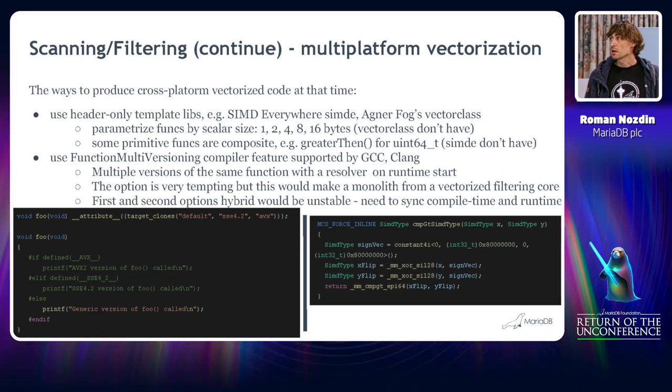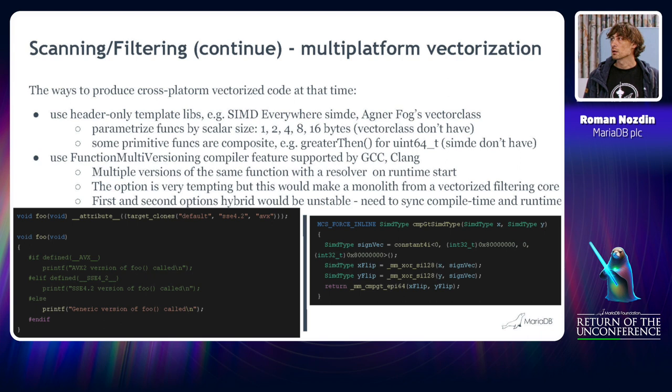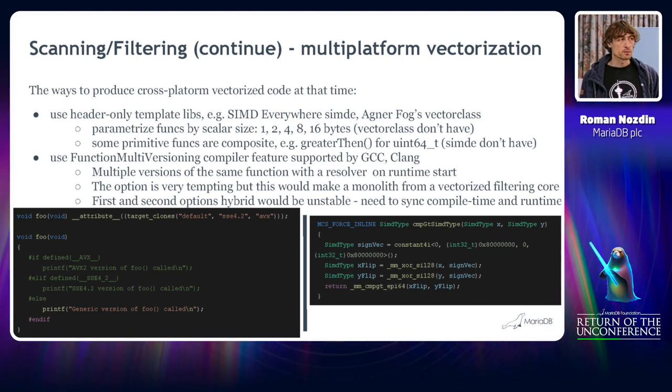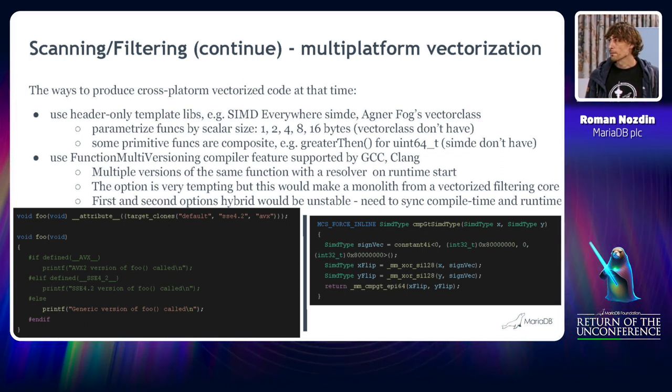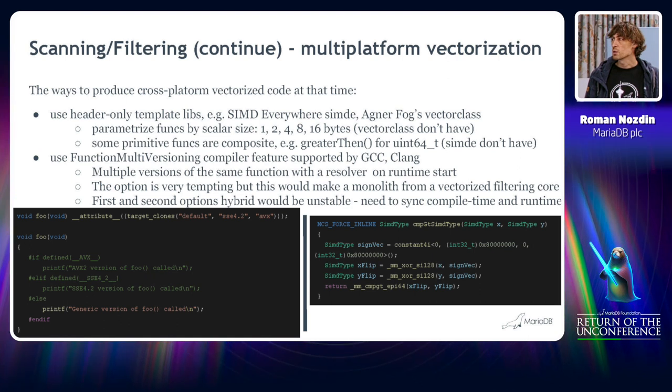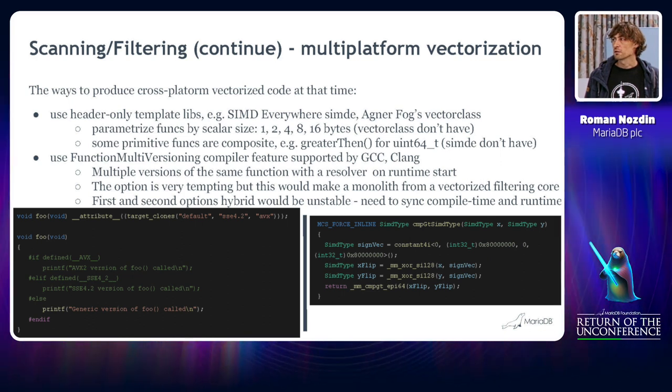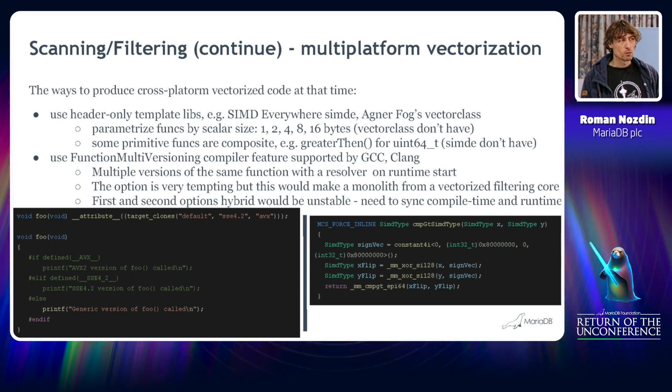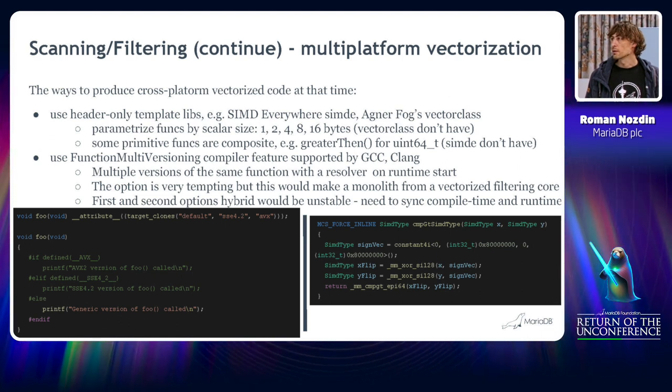The second option would be to use the function multi-version feature of the compiler. Both GCC and Clang support these. And what it is in a nutshell? If you take a look at this snippet on the bottom left, you can see that we can define a number of architectures that have a different version of the same function. It looks like overloading in some cases, but the overload factor here is not the parameter of the function, but the architecture.